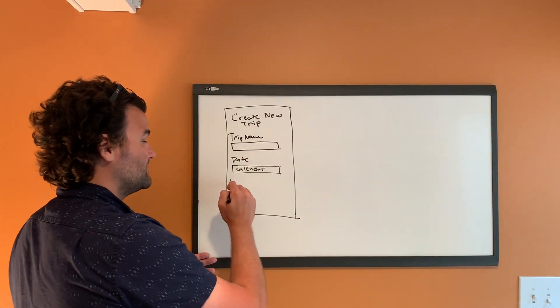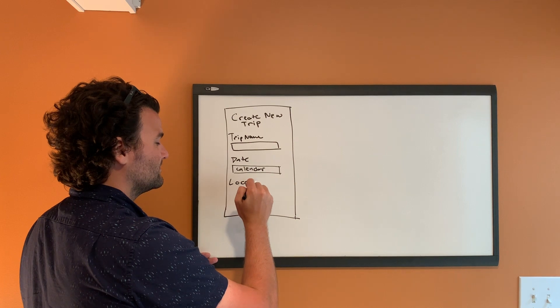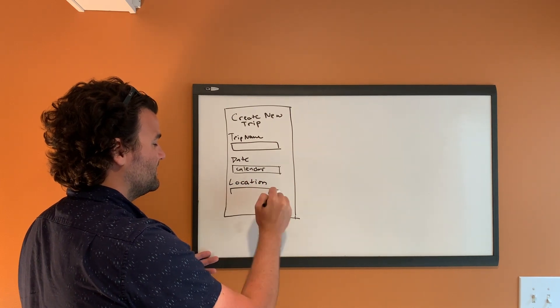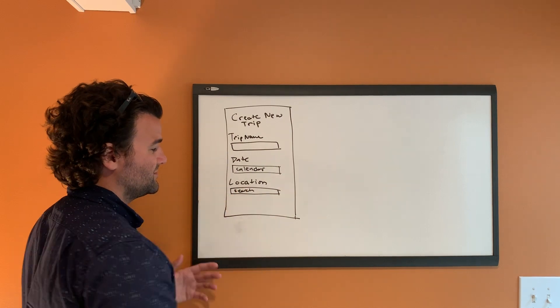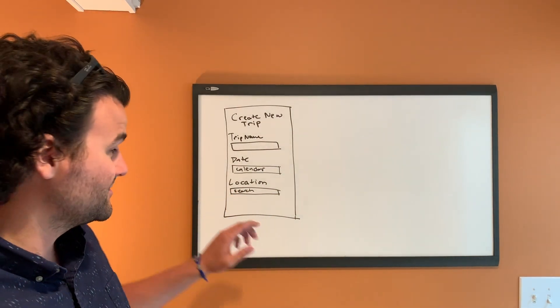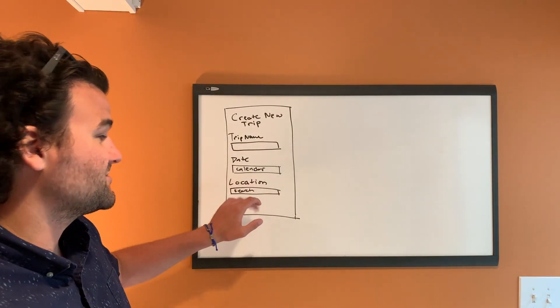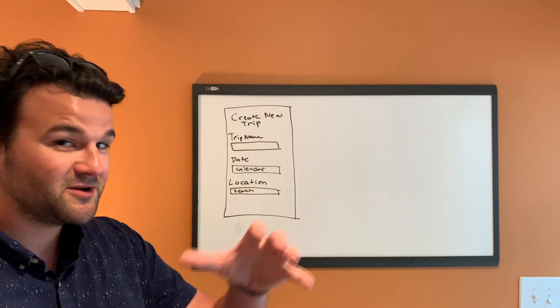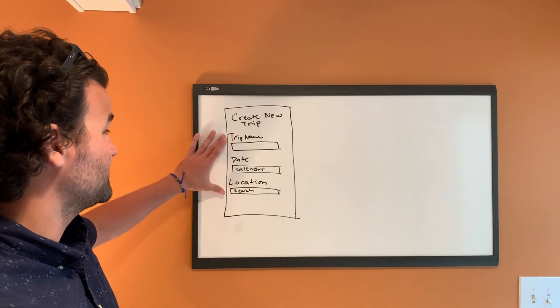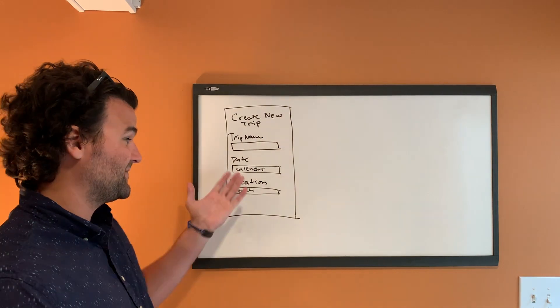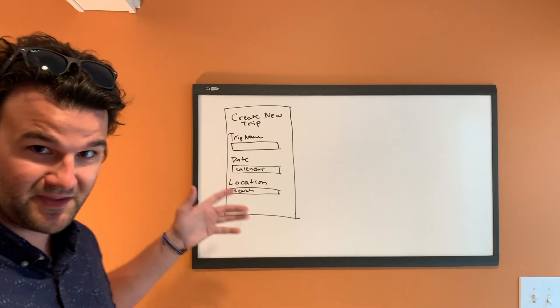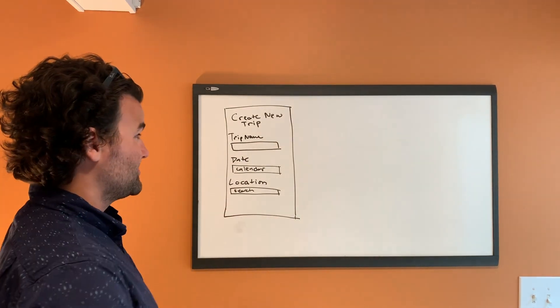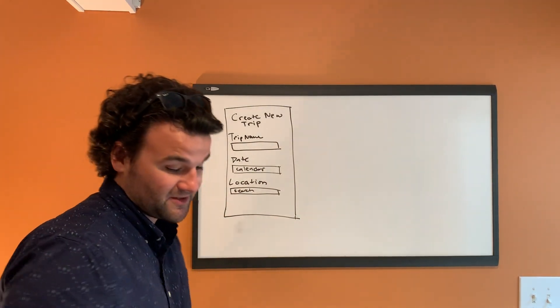The date is there. And then we want location as well. And that will just be a search. So you can search any location in the world. But it'll be one of those nice ones where you click it, you start typing, all the locations come up. That's what we want. And that's simple, basic right there. But that doesn't look good, right? This looks like a boring form.